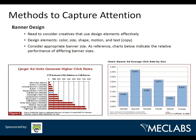Methods to capture attention include different creatives — color, size, shape, motion, text. These tables are about size: a skyscraper at 120 by 600, which sits on the right or left side of a website, will catch twice as many clicks as a full banner at 468 by 60. A micro bar gets about 0.2 relative performance. So just to give you an idea of the effect of size on attention and clicks.